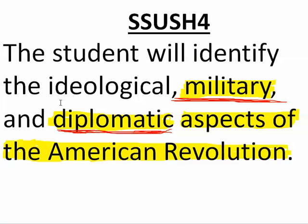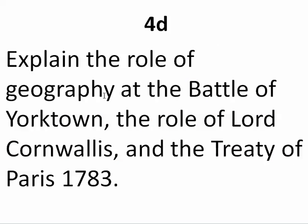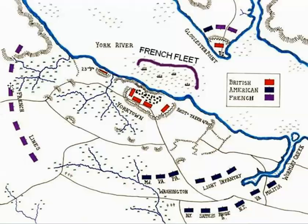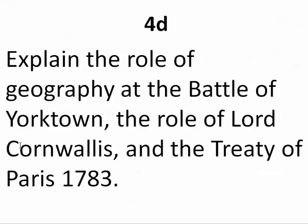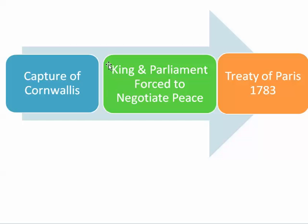I hope we met our objective. The student will identify ideological, military, and diplomatic aspects. We talked about the role of geography at the Battle of Yorktown — with French forces surrounding and capturing Cornwallis, and the French Navy blocking the Chesapeake Bay, James River, and York River. We covered the role of Lord Cornwallis and the Treaty of Paris 1783. Cornwallis's capture forced the King and Parliament to negotiate peace, which became the Treaty of Paris 1783, in which we get all lands east of the Mississippi River, though we don't get Florida.